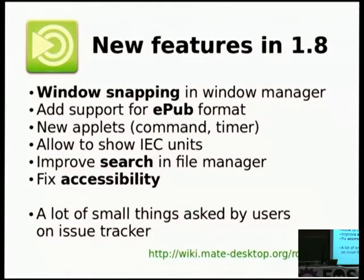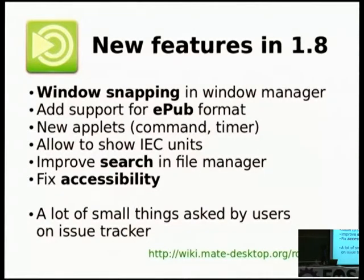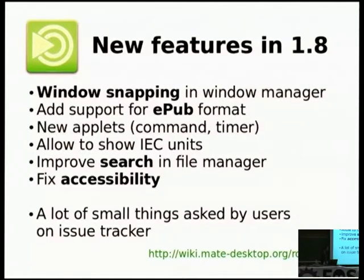There will also be new features in 1.8, like window snapping in the window manager — users will be able to use the mouse to maximize a window to the left, right, or full screen. We will add support for EPUB format in the document viewer, develop new applets for the panel like a command applet that shows the output of a command, and a new timer applet. We will improve the search mode in the file manager, fix accessibility using Orca from GNOME, and implement many small things users are requesting in our tracker. You can check the status of the roadmap in our wiki.